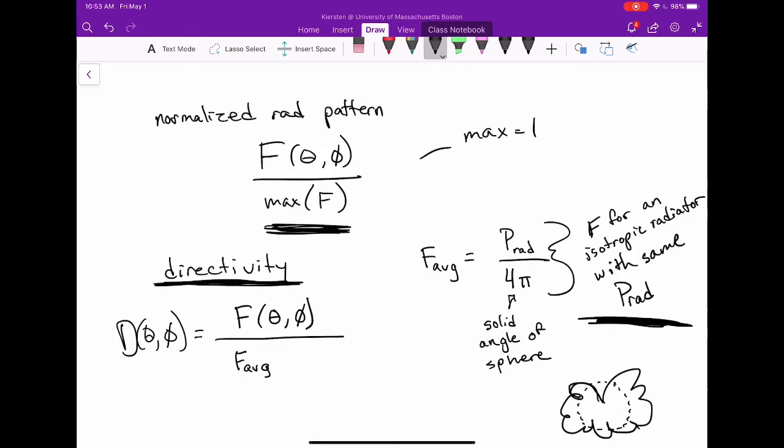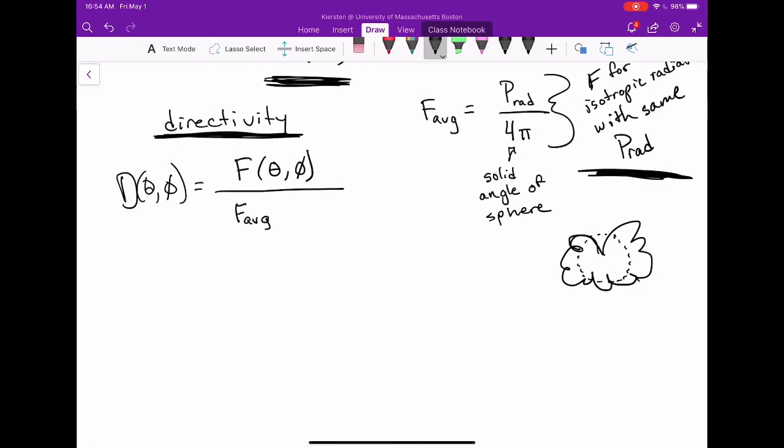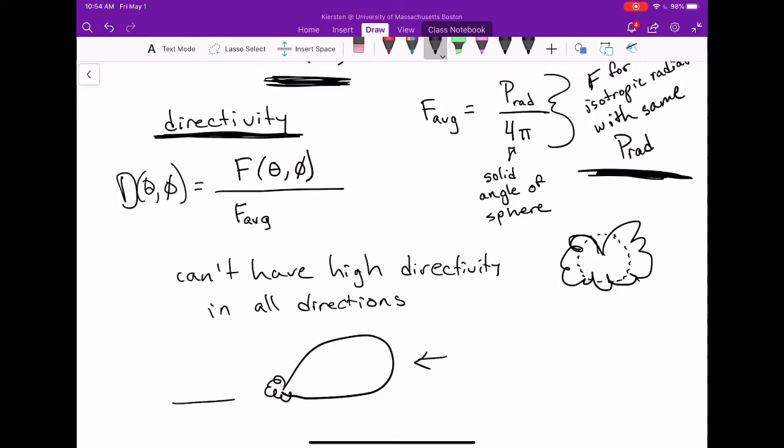That's kind of how you can visualize directivity. You have the same amount of power, but directivity quantifies how much you're concentrating it in one direction over another direction. It also tells you an important fact, and that's that you can't have high directivity in every direction. Directivity is always going to look like this, where you're going to have maybe one direction where you have a lot of directivity and another direction where your directivity is very low, and your isotropic radiator, by comparison, is going to look something like that. So you've got the same total power and different angular distributions.